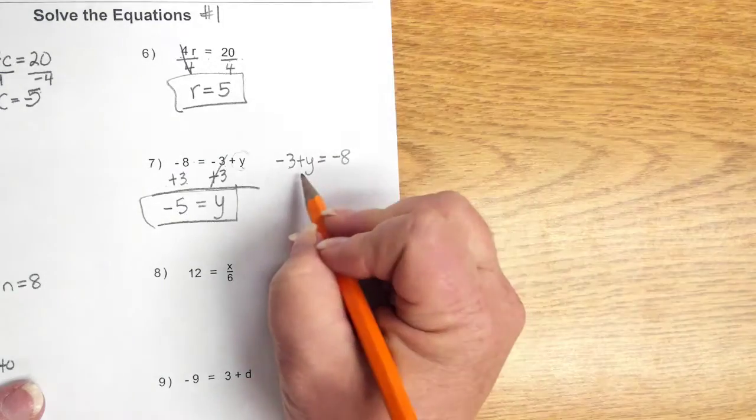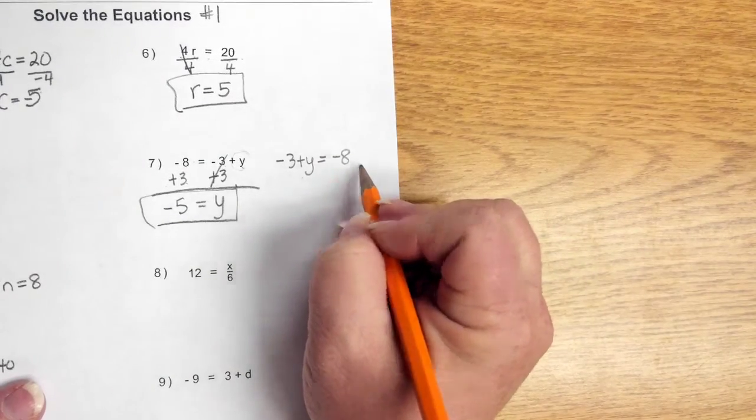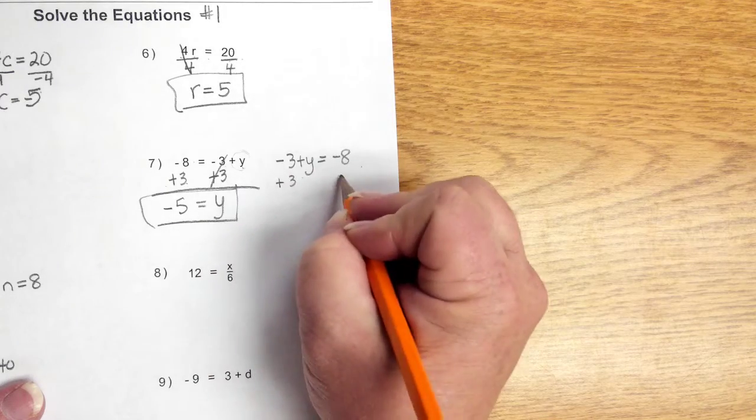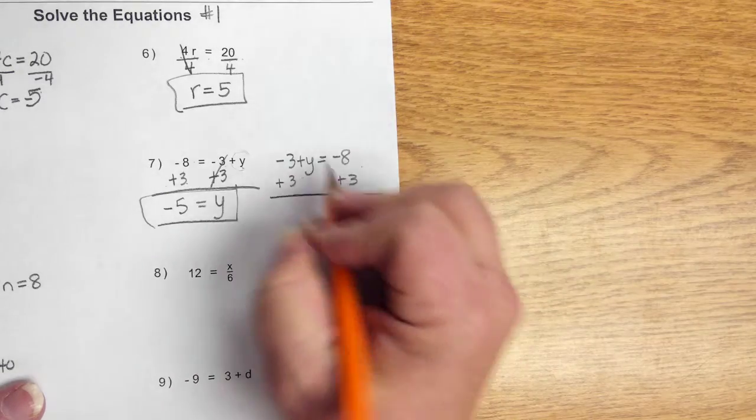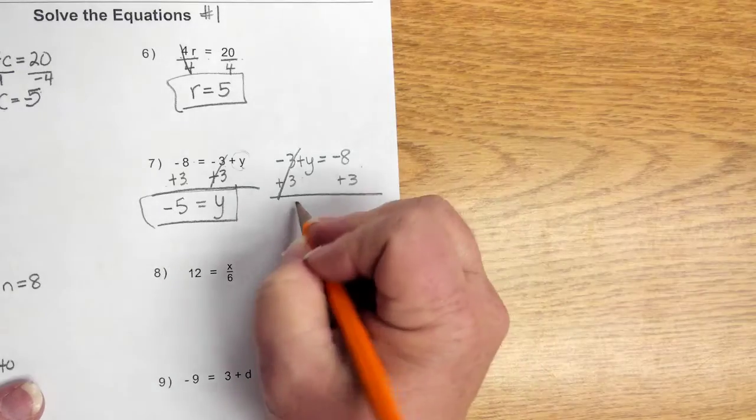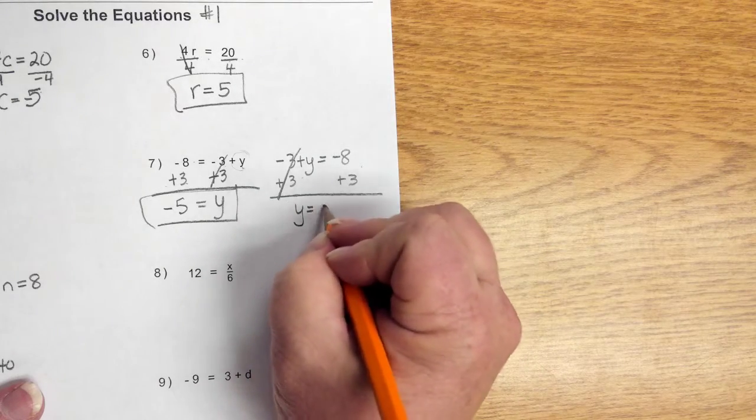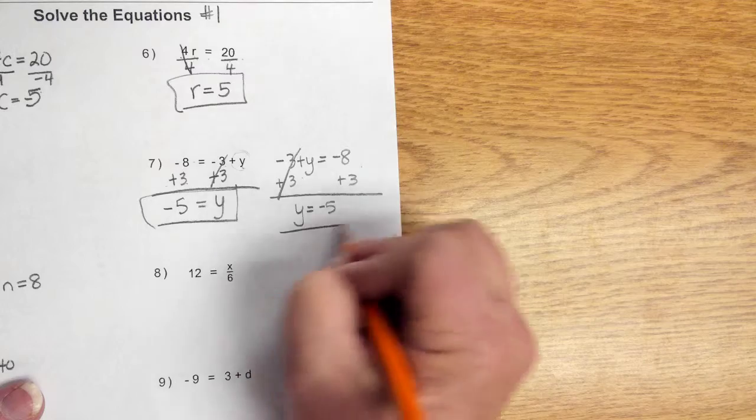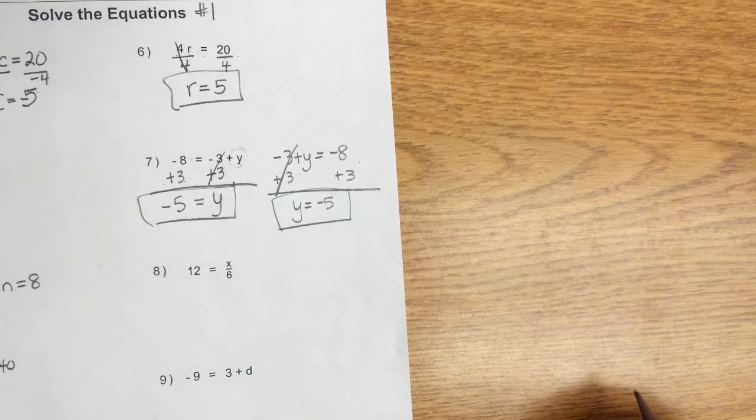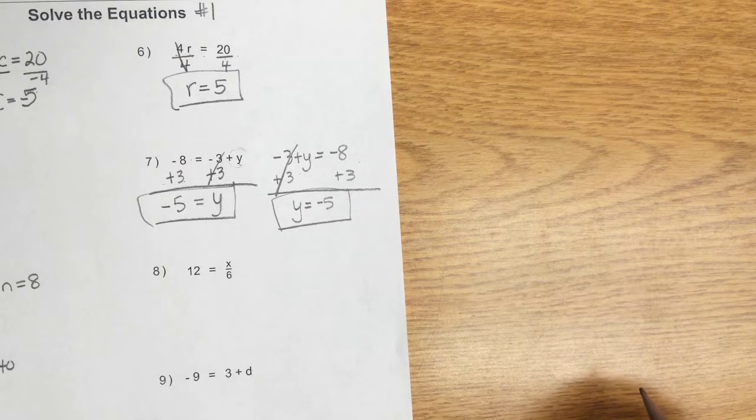And we end up with negative 8 plus 3, which gives us negative 5. Now, I'm going to show you that this is going to be the same thing. I'm going to add 3 to both sides. The 3's cancel out. And I end up with y is equal to negative 5. So, same answer, just written a different backwards kind of.